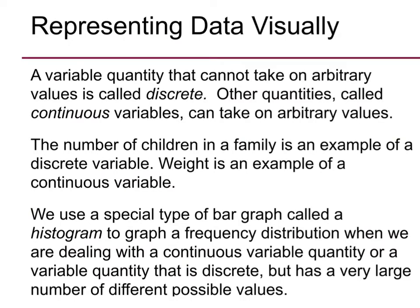We get a couple more definitions. The first being discrete and continuous. The number of children in a family is an example of a discrete variable — one, two, three, four, five — whereas weight is an example of a continuous variable, because I can measure that to whatever decimal point I choose. And then the next definition is for a histogram. A histogram looks kind of like a bar graph, but we use a histogram to graph a frequency distribution when we're dealing with continuous variables.